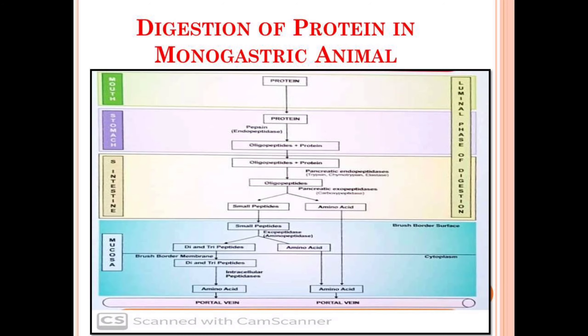Amino acids are the basic building blocks of protein, so unka koi bhi conversion nahi hoga. Lekin ab dipeptide aur tripeptide jo bane hain, they will again convert into the smaller unit — that is amino acid — under the action of intracellular peptidase. Basic motive yaha pe protein ko uske building blocks, amino acid, mein convert karna hai, that can be transported to the portal vein for further assimilation in the body.